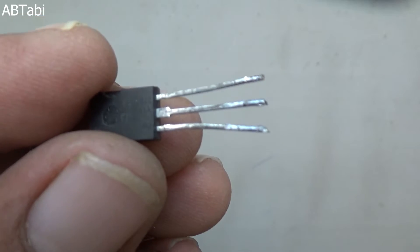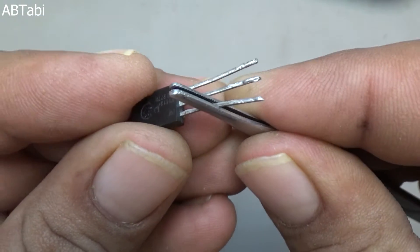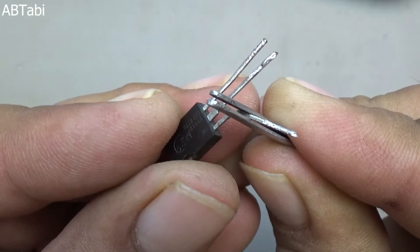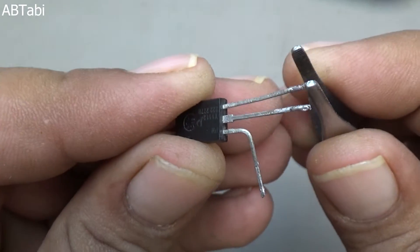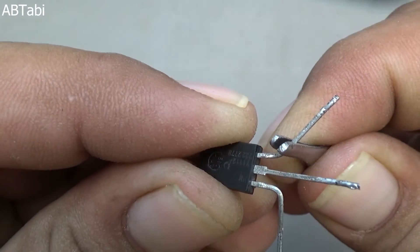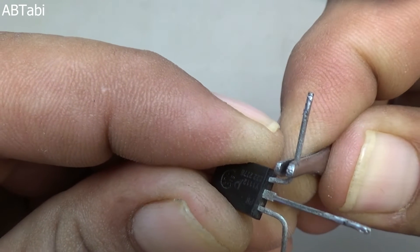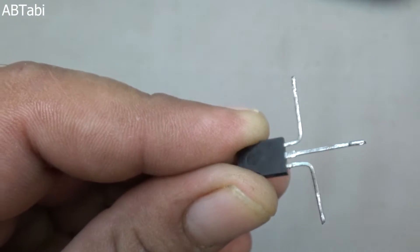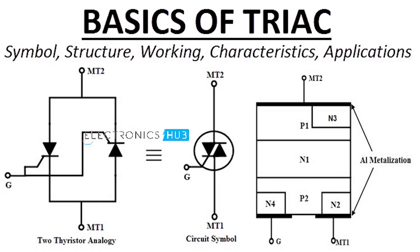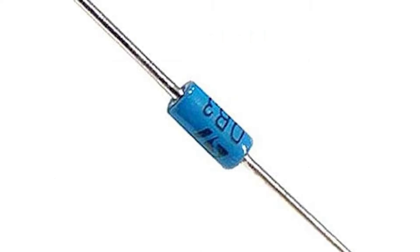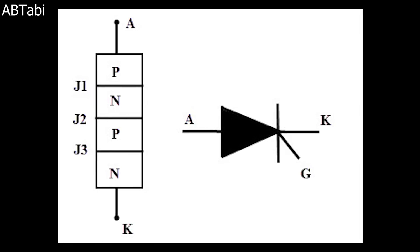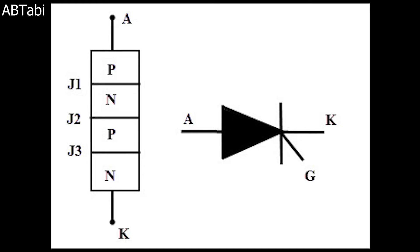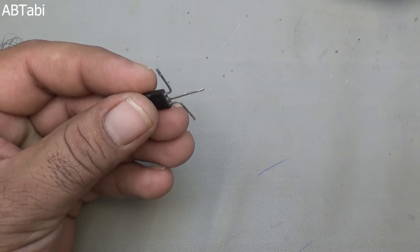SCR is an electronics component. The term SCR stands for Silicon Controlled Rectifier, which is one of the most important members of the thyristor family. It is more popular than other thyristors like TRIAC, SCS, and DIAC. A Silicon Controlled Rectifier, or Semiconductor Controlled Rectifier, is a four-layer solid-state current controlling device.